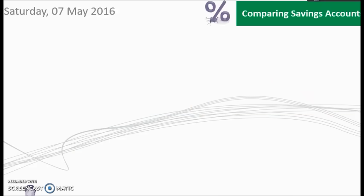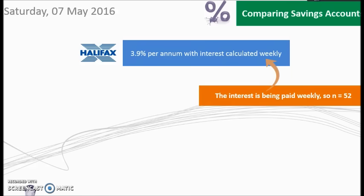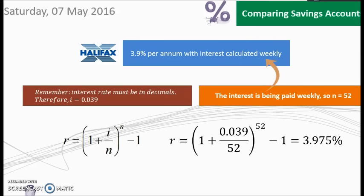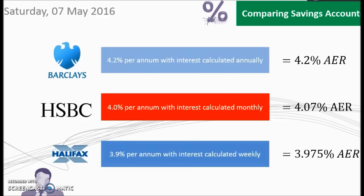And the third offer was from Halifax, 3.9% per year with interest calculated weekly. So how many compounding periods will it be during the year if it's been calculated weekly? It's going to be 52, one for each week of the year. And the i rate, 3.9 as a decimal is 0.039. Write the formula, substitute your values into the formula, put it into your calculator, just double check you're getting that value of 3.975%. So if we had to compare them, by the looks of it, the lowest AER is going to be from Halifax. So Halifax looks like the better option when you're comparing those three offers.